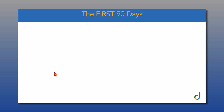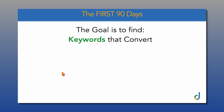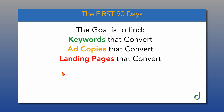Over the first 90 days, frame your goal as finding out which keywords convert, which ad copies convert, and which landing pages convert. It's really important that you don't want Google Ads to be like a last-chance Hail Mary pass if your business is about to completely fail. You want to be setting your budget at a level where you know you've got time — three to four months at least — in order to get this campaign profitable.